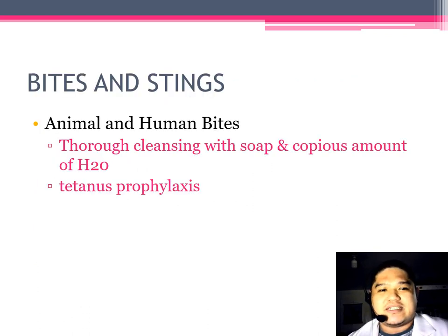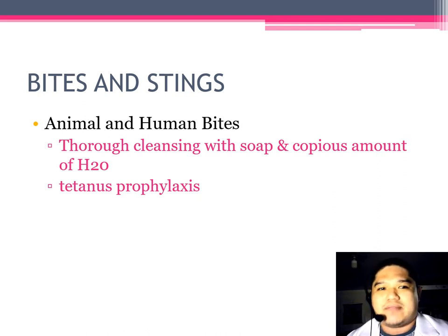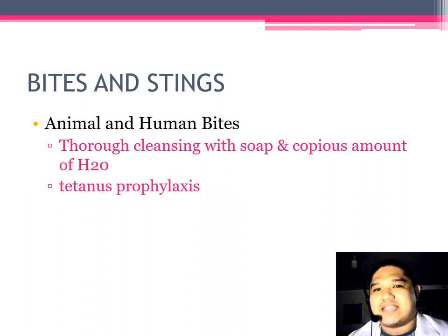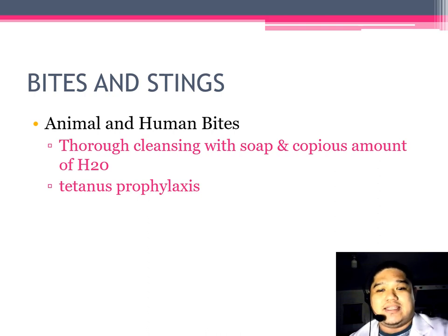Let's first discuss bites and stings. Animals and human bites can be comparable — they might pose a risk of infection, specifically rabies infection. To prevent this kind of infection, we may perform thorough cleaning with soap and a copious amount of clean water. We can also administer tetanus prophylaxis to prevent infection from Clostridium tetanus.